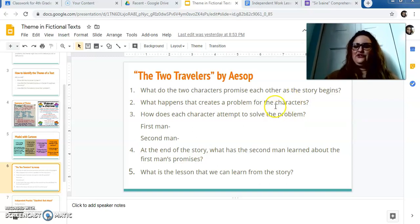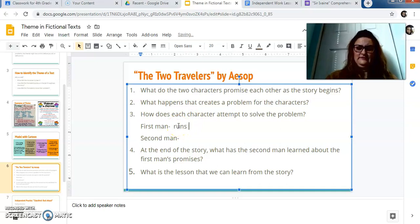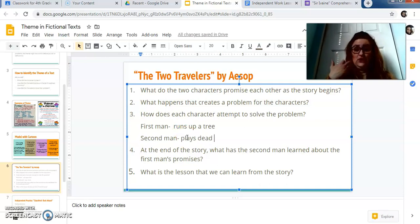What happens that creates a problem for the characters? A bear just rushes onto the scene. He comes up out of nowhere. How does each character attempt to solve the problem? So to escape from the bear, the first man runs up a tree. And he runs away from the second man who he says he's going to help. The second man basically plays dead on the ground, and hopes that, and just hopes for the best, pray that the bear is not going to mess with him.